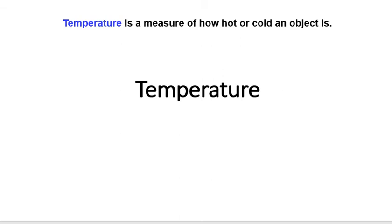In chemistry, like any other sciences, we have three temperature scales. One of those is degrees Celsius, another one is degrees Fahrenheit, and the last one is Kelvin. Some of you are familiar with degrees Celsius and degrees Fahrenheit, but you may have no idea about Kelvin.